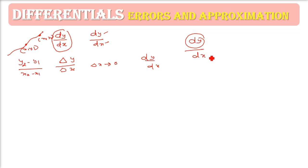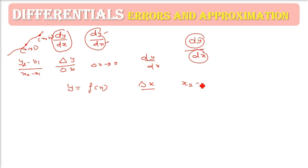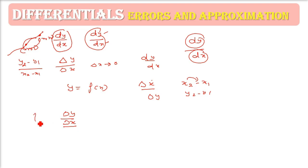So when dy is considered as a different entity and dx as a different entity, how are we going to use it for errors and approximation? We have a function y = f(x). Delta x is the change in x — very very small. To find the corresponding change in y (delta y = y2 minus y1), we use the limit: as delta x tends to zero, delta y by delta x is called dy/dx, which we write as f'(x) or y-prime.